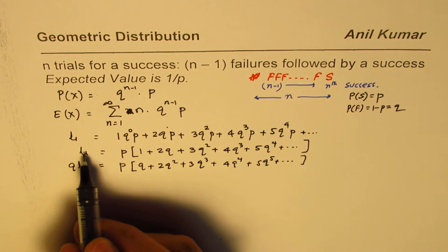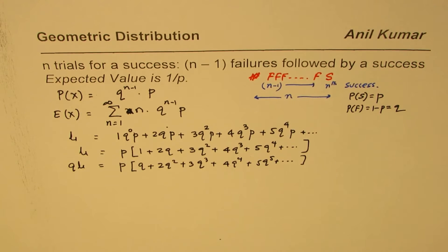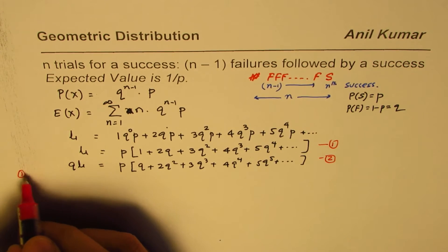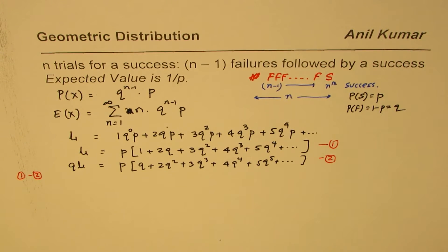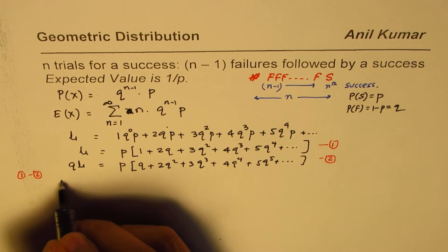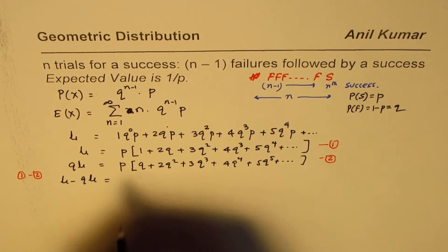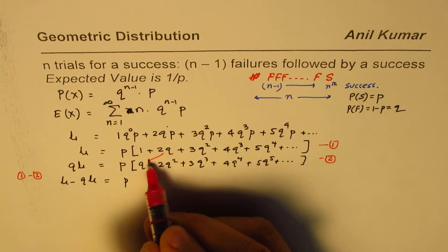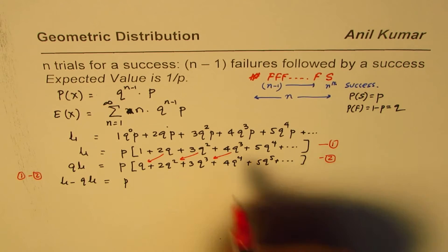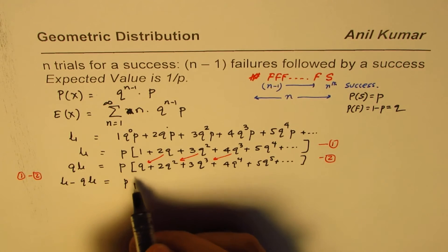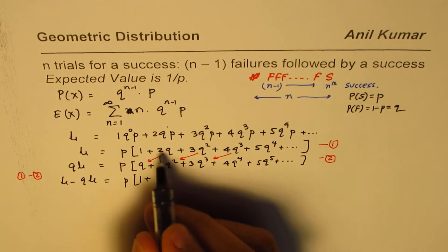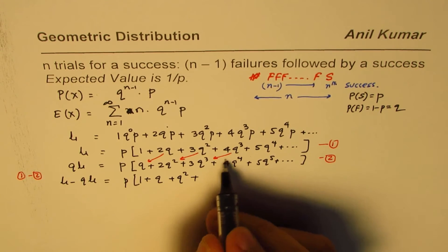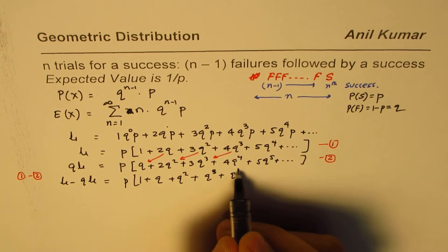Now if I subtract equation 2 from equation 1, I do 1 minus 2. So μ minus Qμ equals P times (1 plus Q plus Q square plus Q cube plus Q to the power of 4, and so on), because when we subtract, these terms combine: 2Q minus Q is Q, 3Q square minus 2Q square is Q square, and so on.